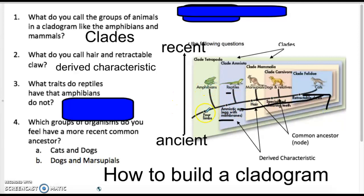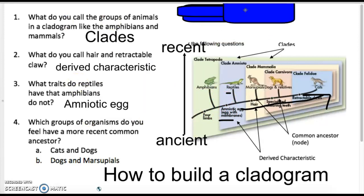Well, reptiles have amniotic eggs, and so does everything else going forward. But frogs do not. So anything that's in front of the clade group would not have it, but anything behind it would. So amniotic eggs is what reptiles have that amphibians don't.